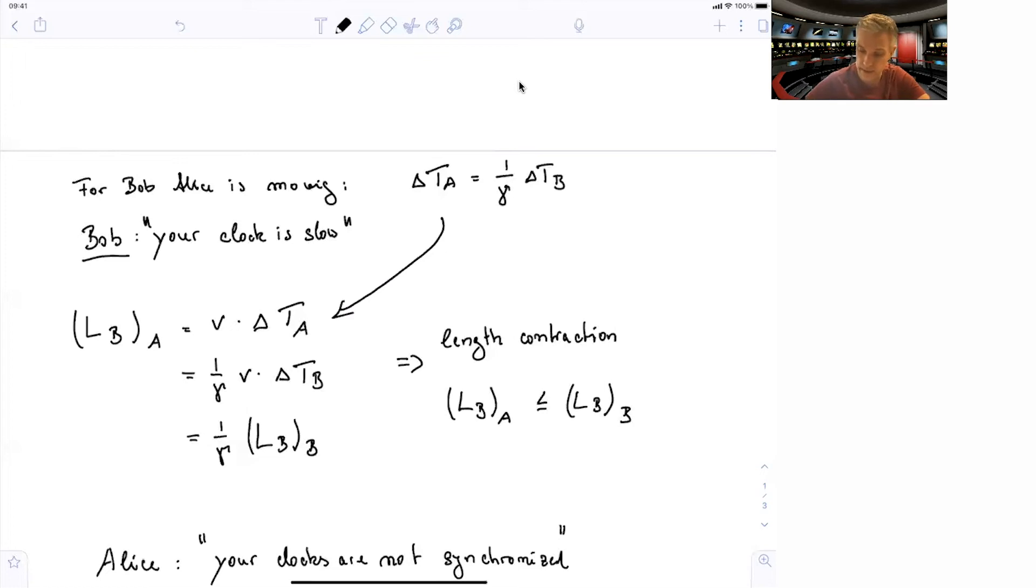Now here, you have to see that in this example, what I just did is I changed around who's moving and who's resting. So here, the observation of Alice of Bob's spacecraft is that of a moving spacecraft. So Alice sees a moving spacecraft, which is shorter than the spacecraft itself at rest.